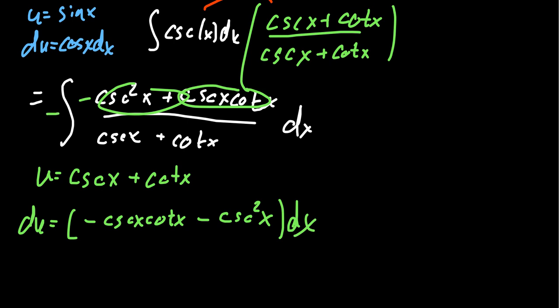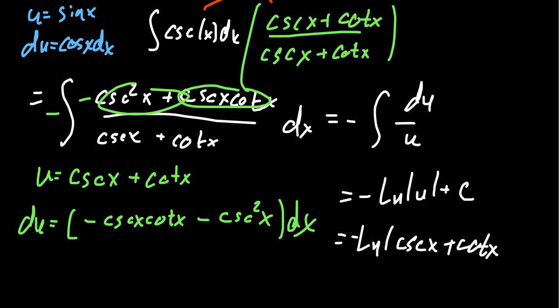So in terms of the u-substitution works out really nicely. You get a negative, the integral of du over u. Again, that becomes a negative, the natural log of the absolute value of u plus a constant, in which case you could write this as the natural log of the absolute value. Remember u here is cosecant plus cotangent. So you get cosecant x. Don't forget the negative sign. Negative natural log of absolute value of cosecant plus cotangent x plus a constant.